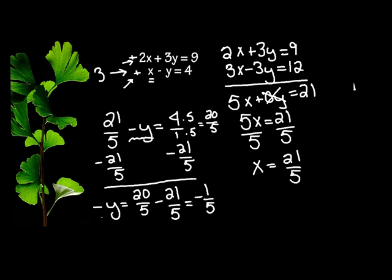But remember, I don't want a negative y, I want a positive y. So you can either multiply both sides by negative 1 or divide by negative 1. And I just like to divide by negative 1. It doesn't matter. So I get y to equal positive 1 fifth.